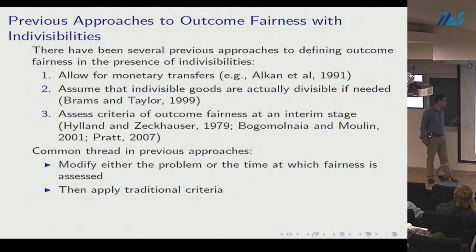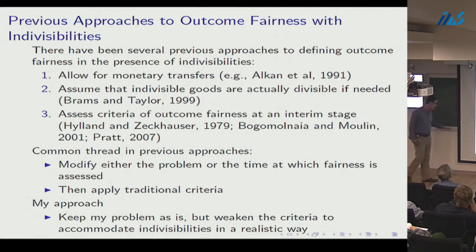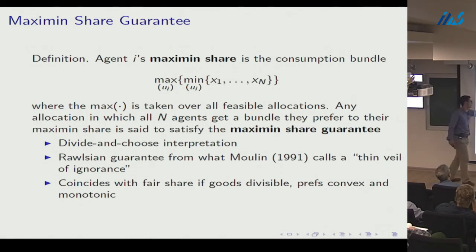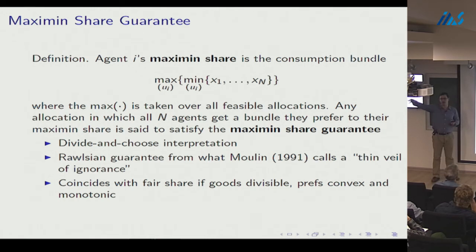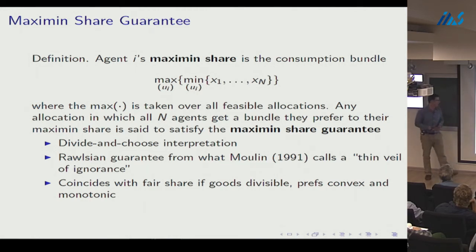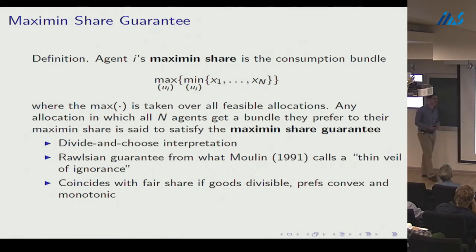The common thread in previous approaches is to modify the problem or the time at which fairness is assessed, then apply traditional criteria. I will instead keep the problem as is but weaken the criteria to accommodate indivisibilities. I define an agent's maximin share as: take all resources in the economy, divide them into n bundles to maximize (with respect to my utility) the least preferred of the n bundles — playing divide-and-choose against adversarial opponents. An allocation satisfies the maximin share guarantee if every agent gets something they prefer to that bundle.